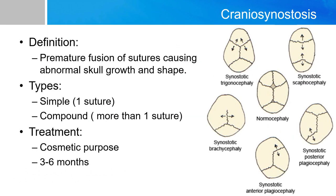Craniosynostosis is defined as a premature fusion of sutures causing abnormal skull growth and shape. There are many types depending on which suture is fused. In general, there are two broad categories depending on how many sutures are involved: it is considered simple if only one suture is involved, and compound if more than one is involved.